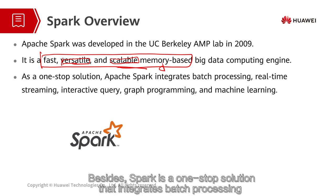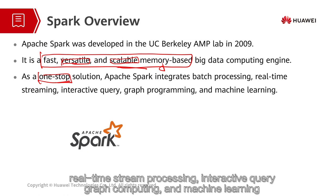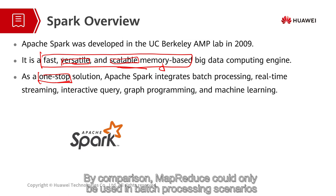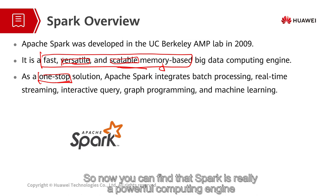Besides, Spark is a one-stop solution that integrates batch processing, real-time stream processing, interactive query, graph computing, and machine learning. These powerful functions help Spark capture the different needs at different scenarios. By comparison, MapReduce could only be used in batch processing scenarios. So now you can find that Spark is really a powerful computing engine.